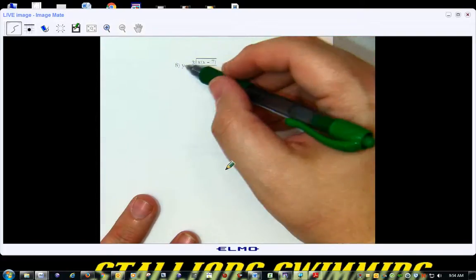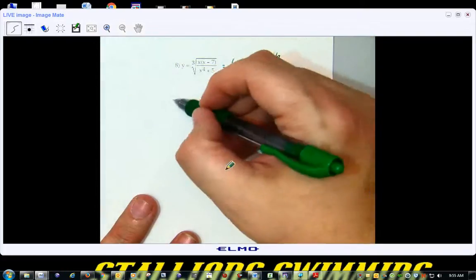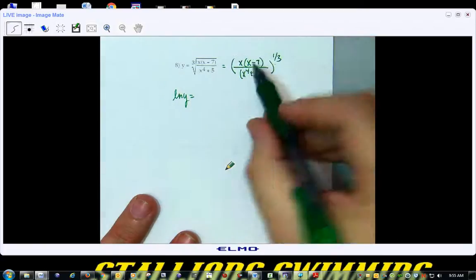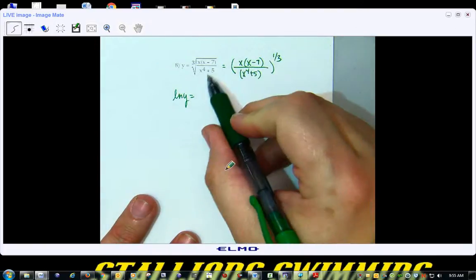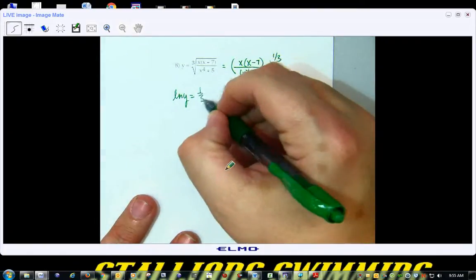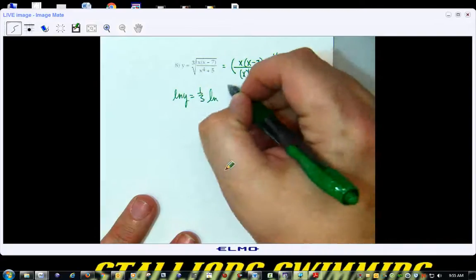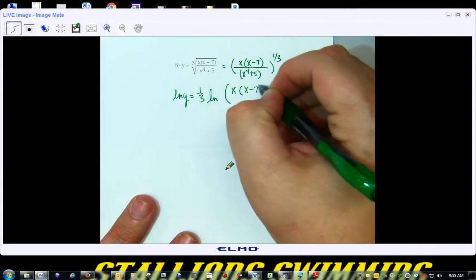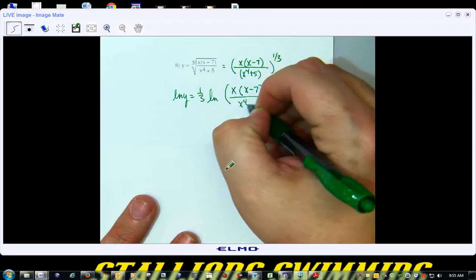Now, you can take the natural log of both sides. So, the natural log of y is going to be equal to the natural log of this. Can I just take out that 1/3rd right off the bat? Alright, so 1/3rd times the natural log of x times x minus 7 over x to the 4th plus 5.